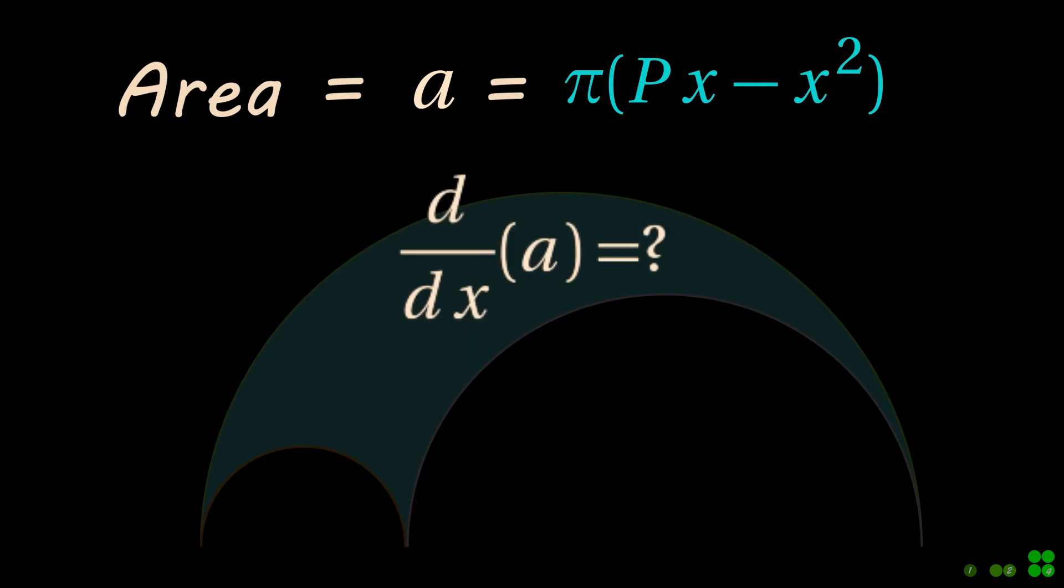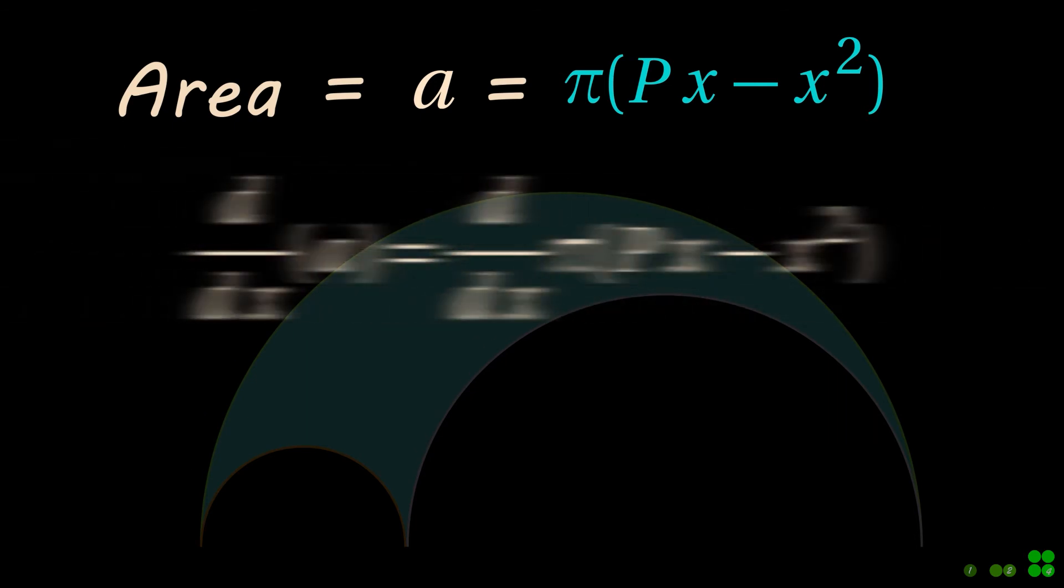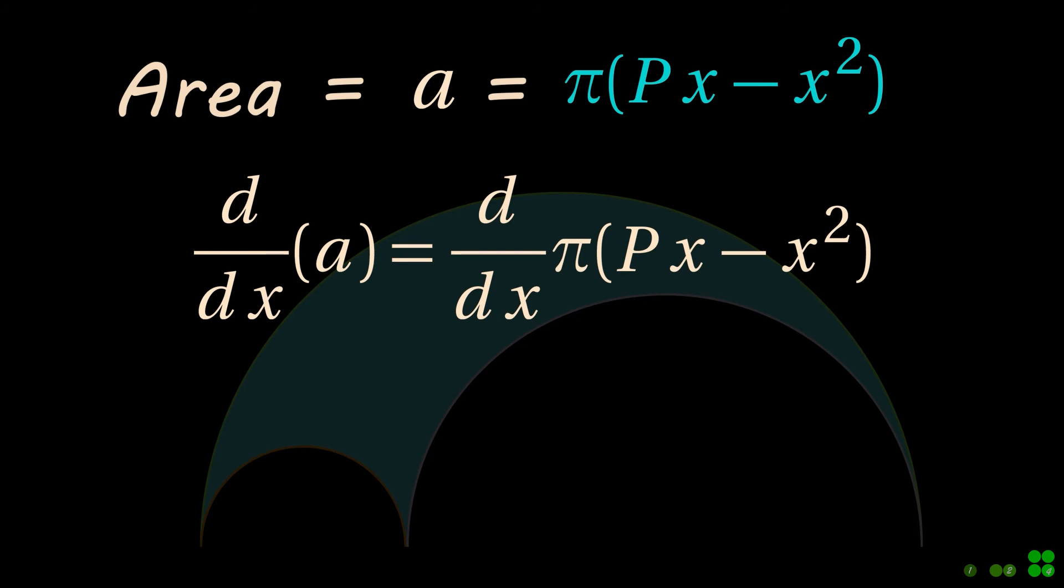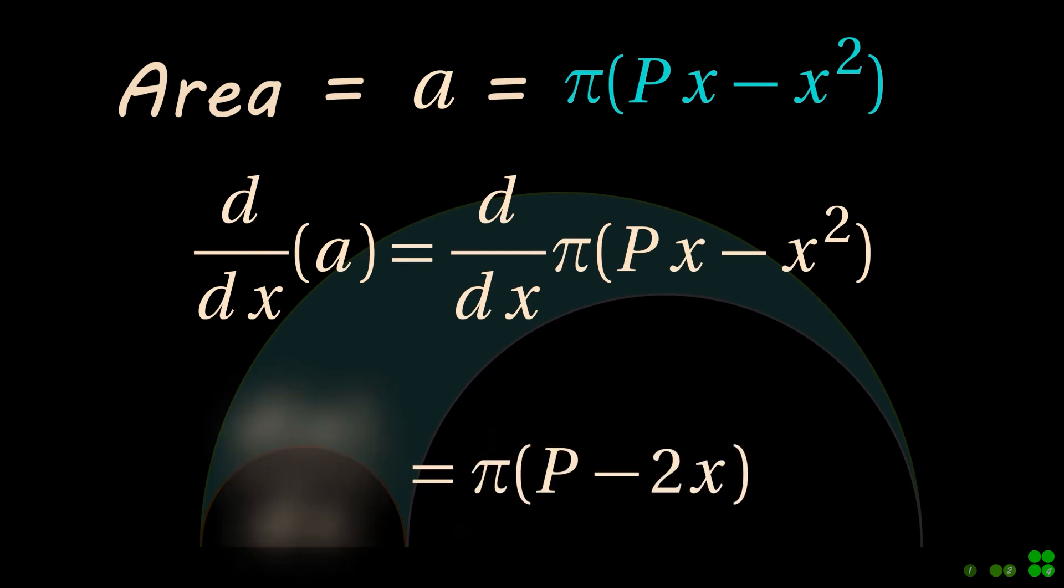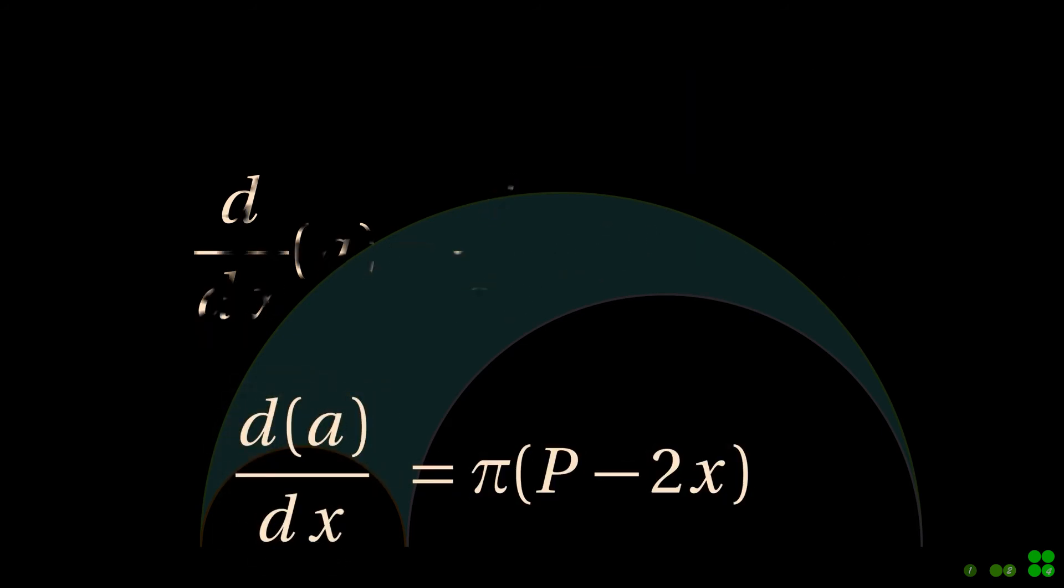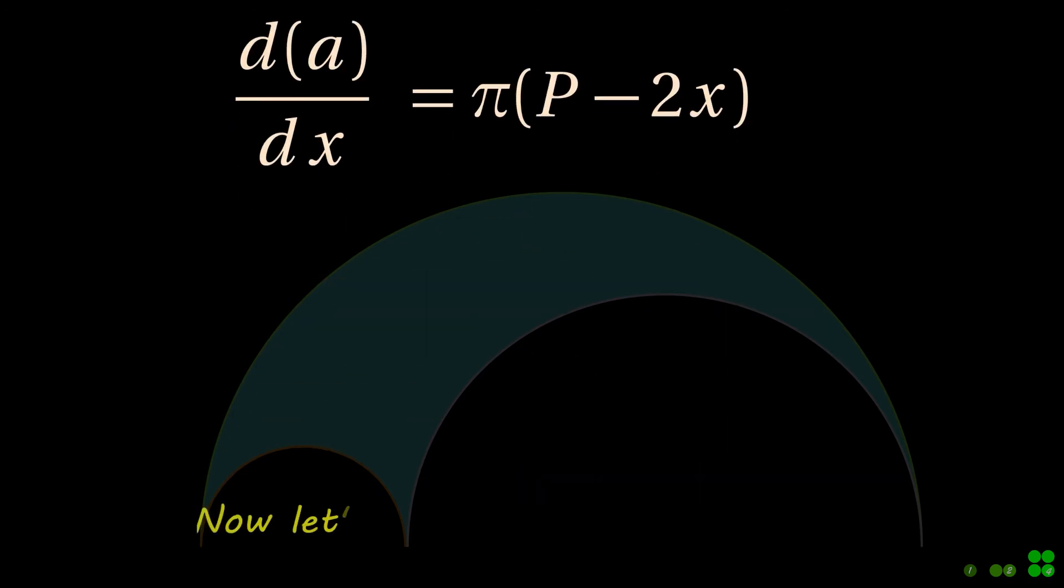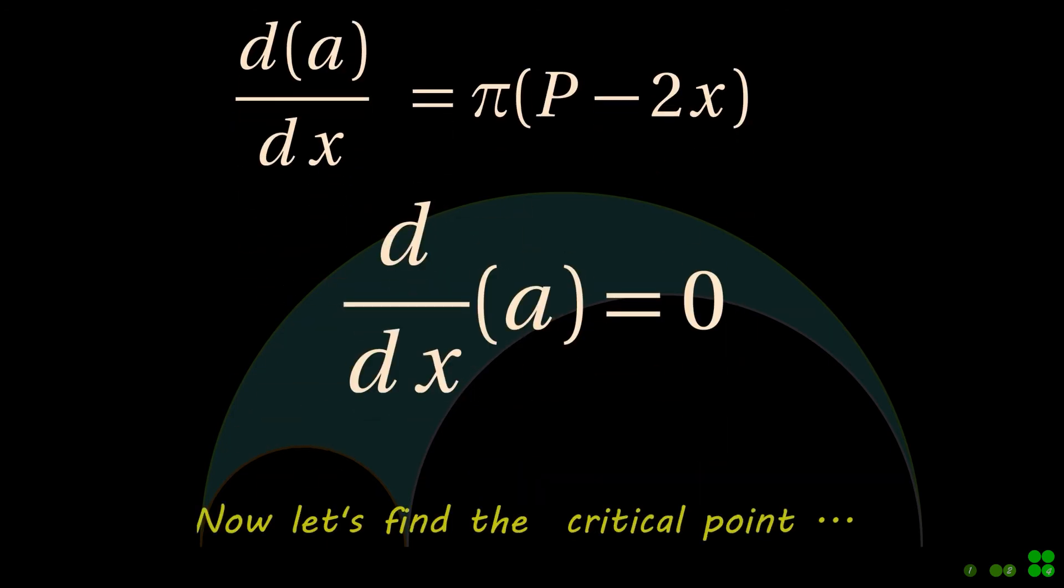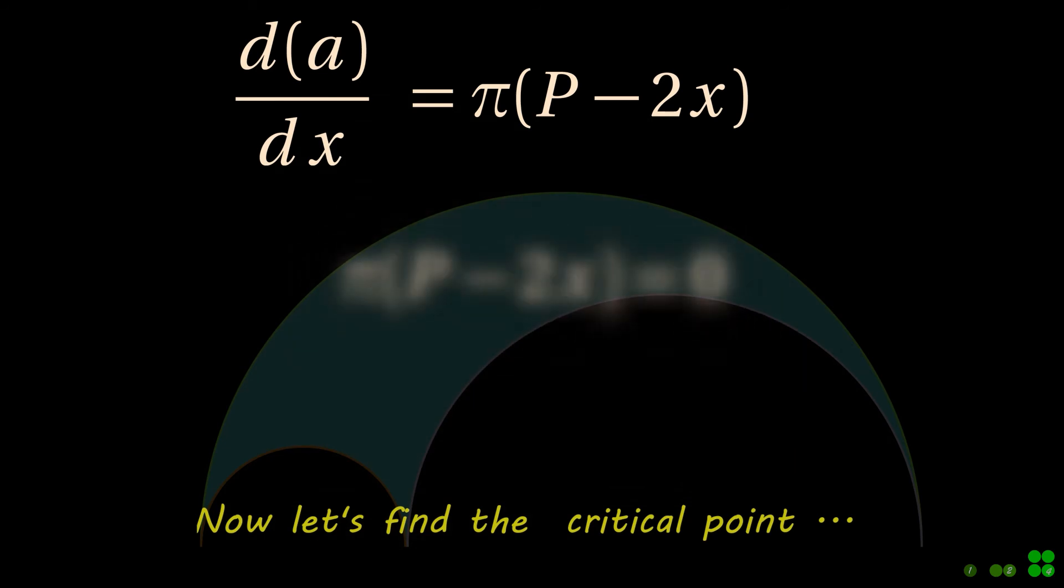Now let's find the first derivative and set this equal to zero. Now find the x value for which first derivative is zero.